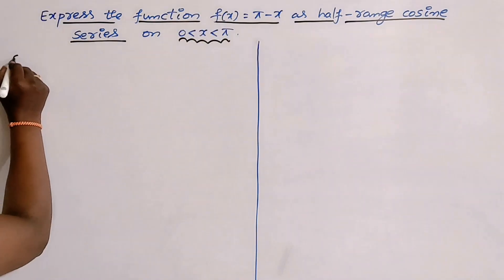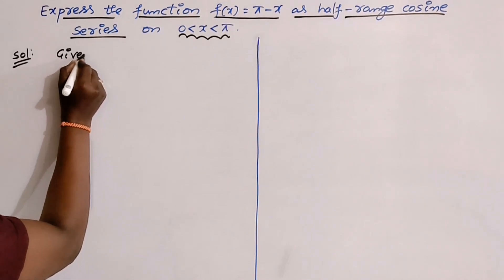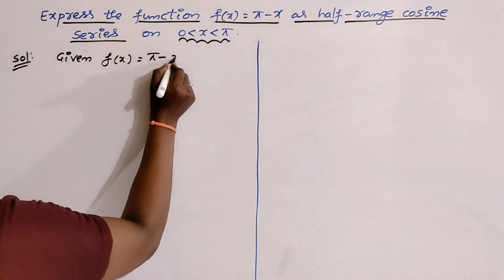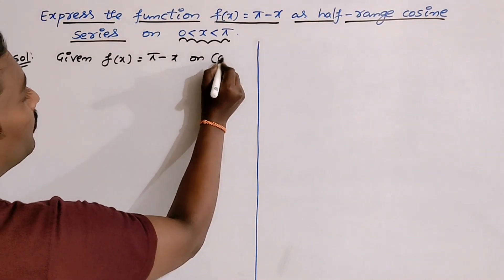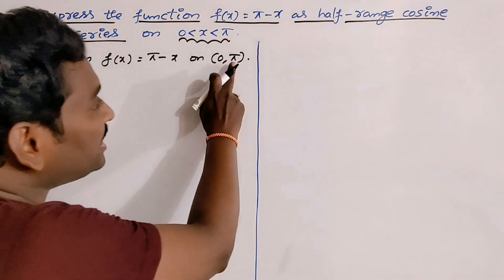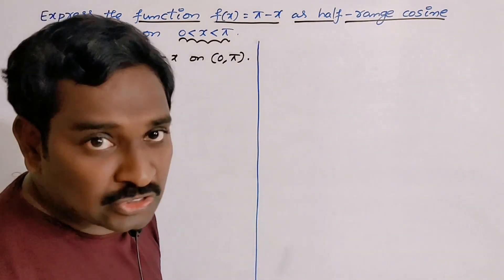Given that f(x) = π - x on open interval (0, π). Here interval length is π - 0, so you will get only half-range expansions only.